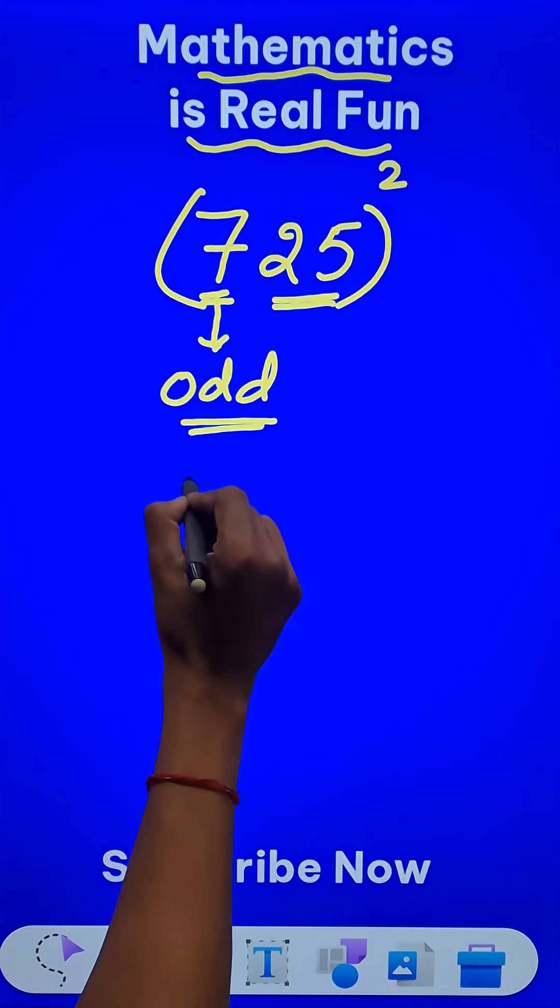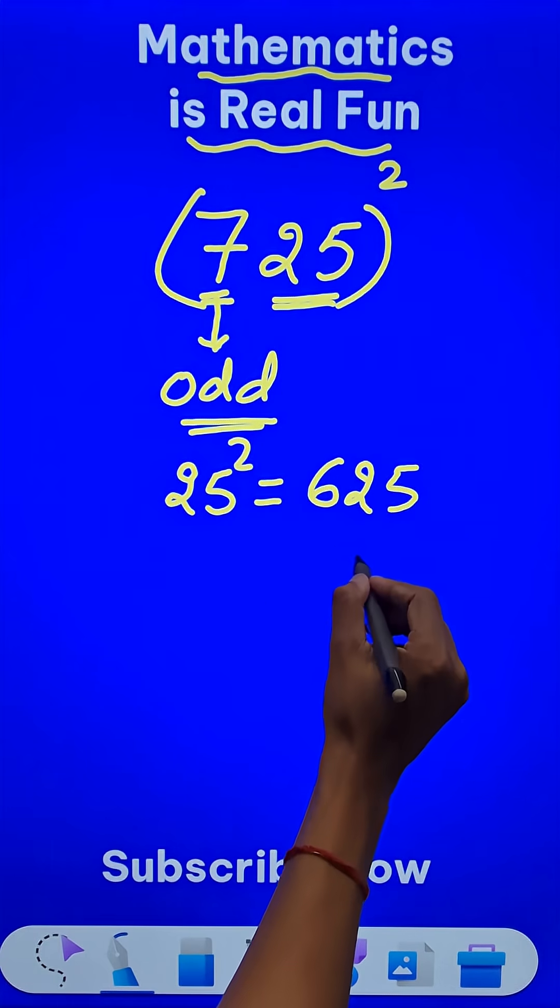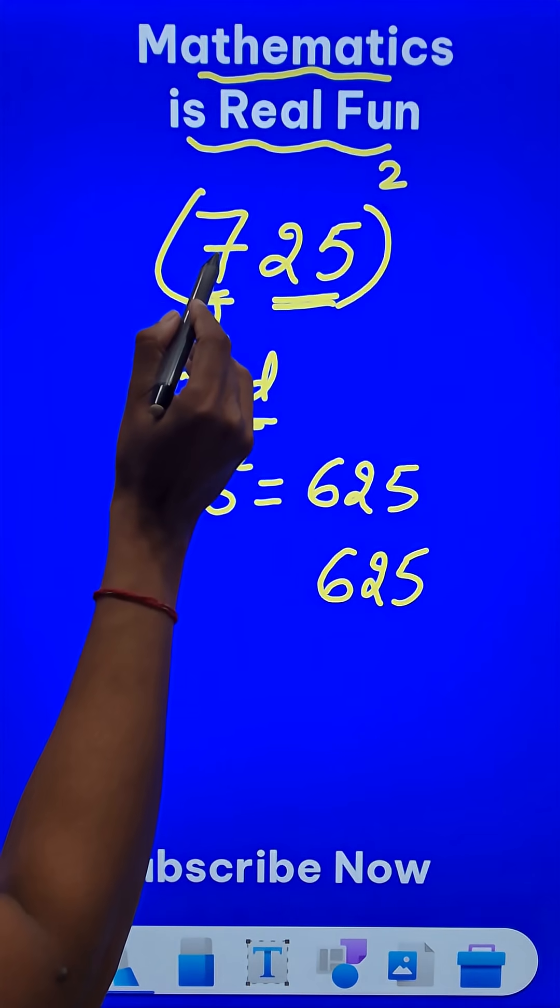25 squared, we all know, is 625. So the answer for this question is going to end in 625. Since this number 7 is odd,